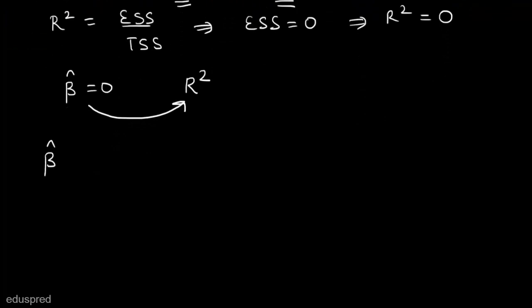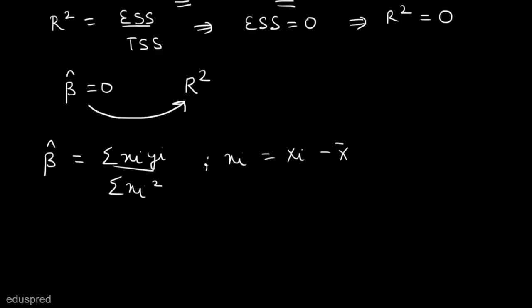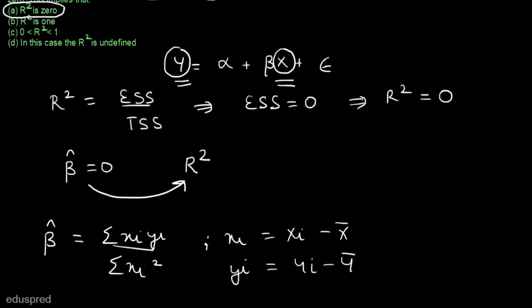We know that beta hat equals summation(xi * yi) divided by summation(xi²), where small xi = capital Xi minus X-bar and small yi = capital Yi minus Y-bar. This is the formula to calculate beta hat.